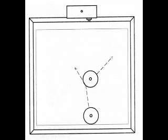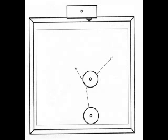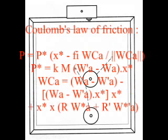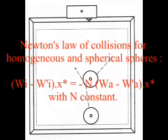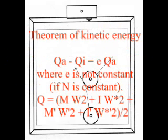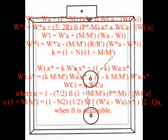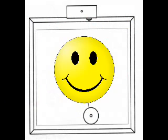Now it's time for some real math. Using the laws of conservation of linear momentum, conservation of angular momentum, Coulomb's law of friction, Newton's law of collisions for homogeneous and spherical spheres, and the theorem of kinetic energy, it is possible to find almost all the information about a collision through substitution. When you are finally done, you should get an equation that looks like this. This equation has all the information about the collision, including position of the balls, their velocities, and the angles that they collided at. Although, I don't think anybody's actually ever used it when playing pool.